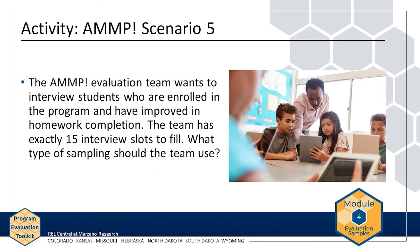The AMP evaluation team wants to interview students who are enrolled in the program and have improved in homework completion. They have exactly 15 interview slots to fill. The most applicable sampling type is consecutive sampling. The team can interview students in AMP who meet the criteria of improved homework completion until the 15 slots are filled — inviting all eligible students but scheduling interviews with only the first 15 who respond to the invitation.